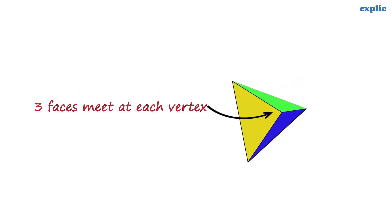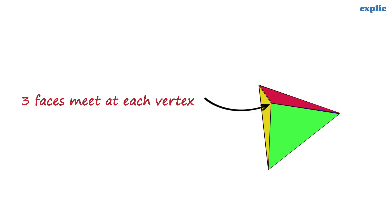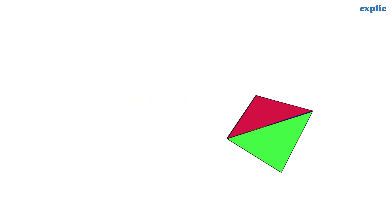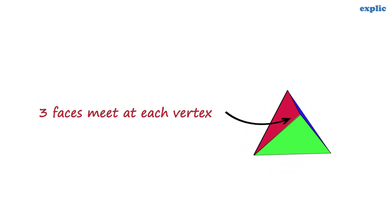Similarly, in a triangular pyramid three equilateral triangles meet at each vertex, hence it is a regular polyhedron.